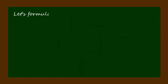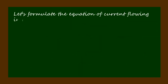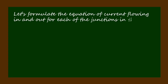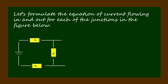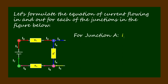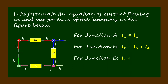Let's formulate the equation of current flowing in and out for each of the junctions in the figure. For junction A: I1 equals I2. For junction B: I2 equals I3 plus I4. For junction C: I4 plus I5 equals I6. For junction D: I6 equals I7.